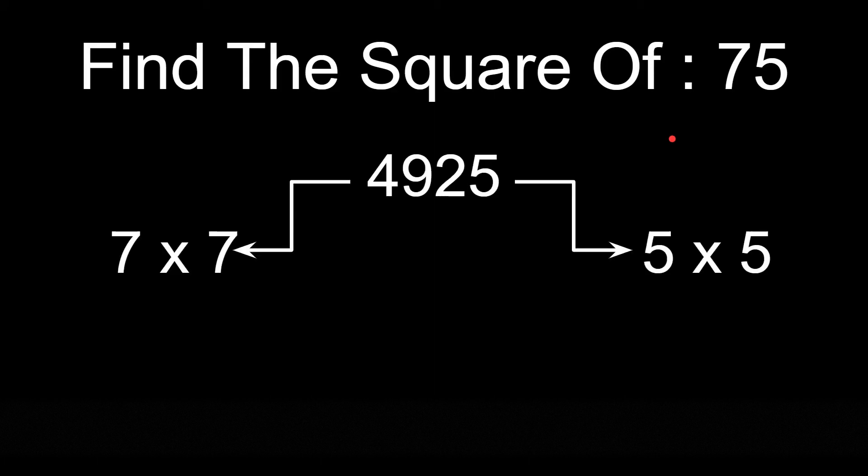So we have to find the square of 75. For this, the first step is to write the squares of the digits in the number. So square of 7 is 49 and square of 5 is 25.